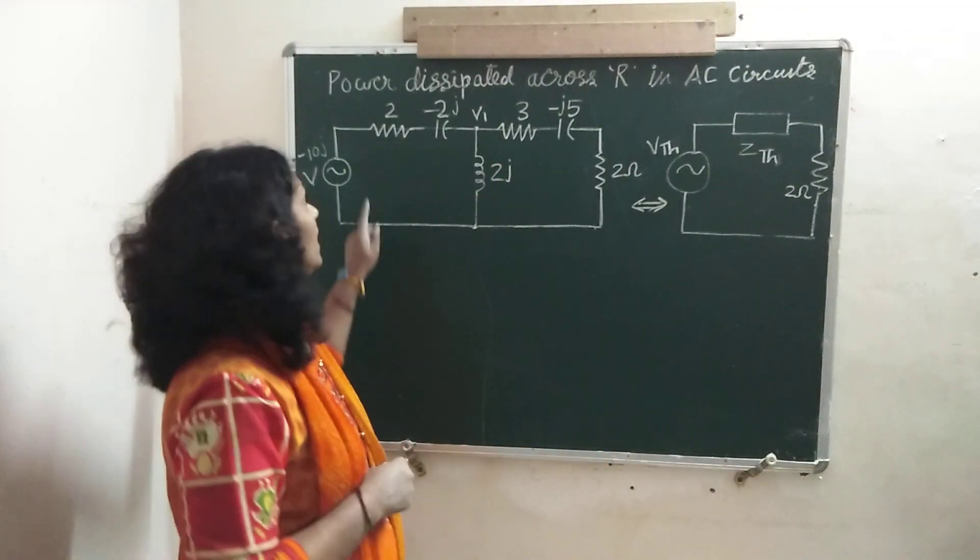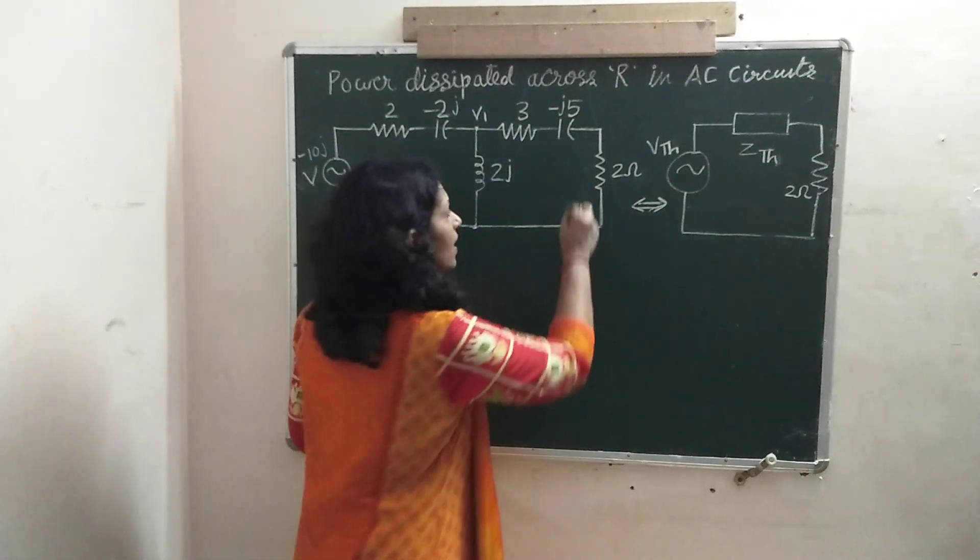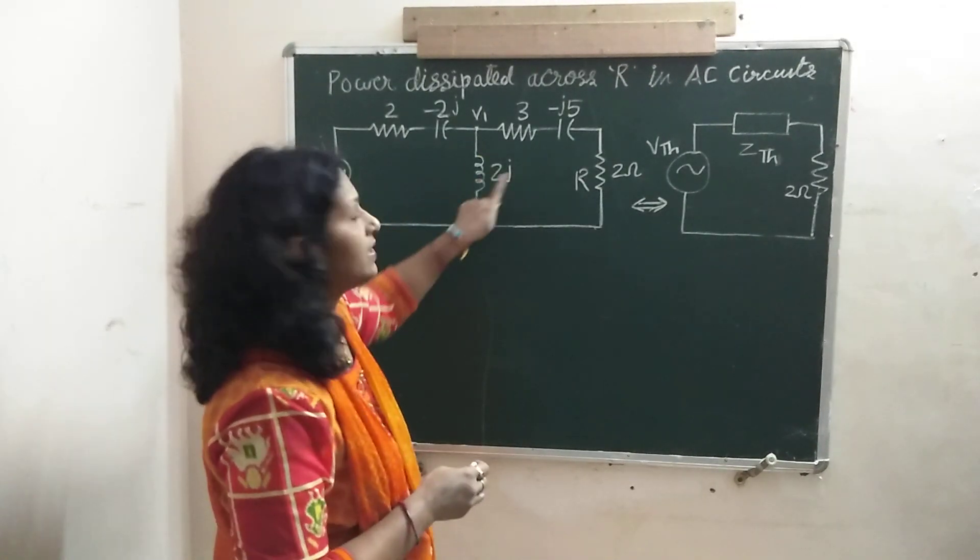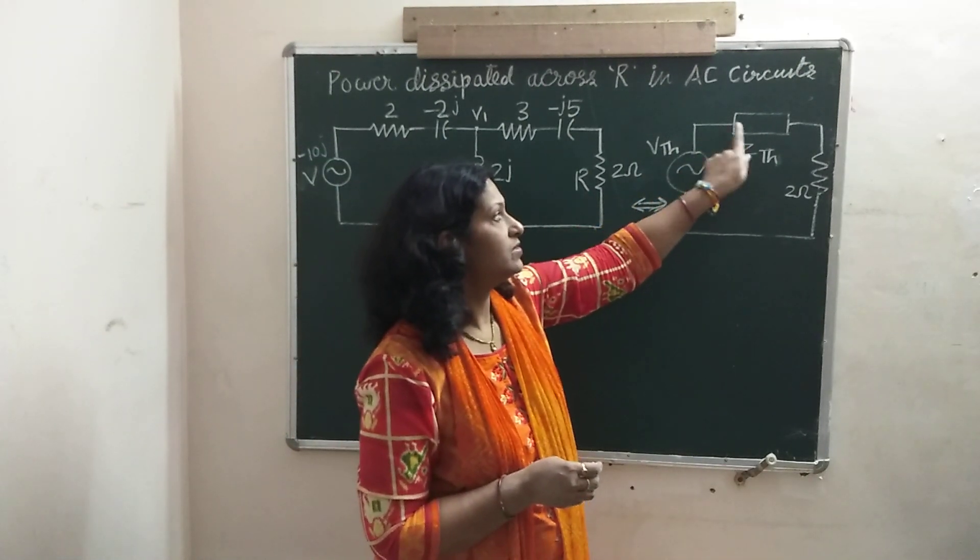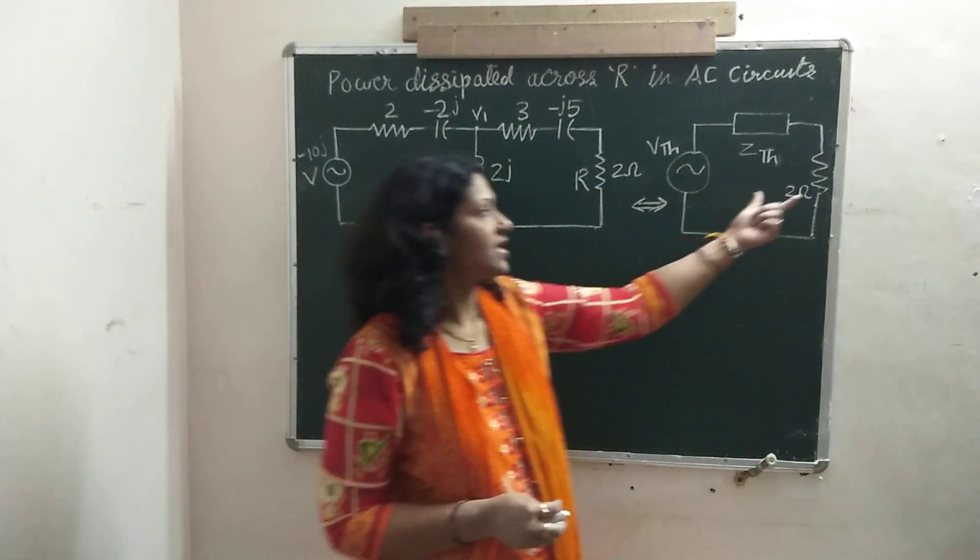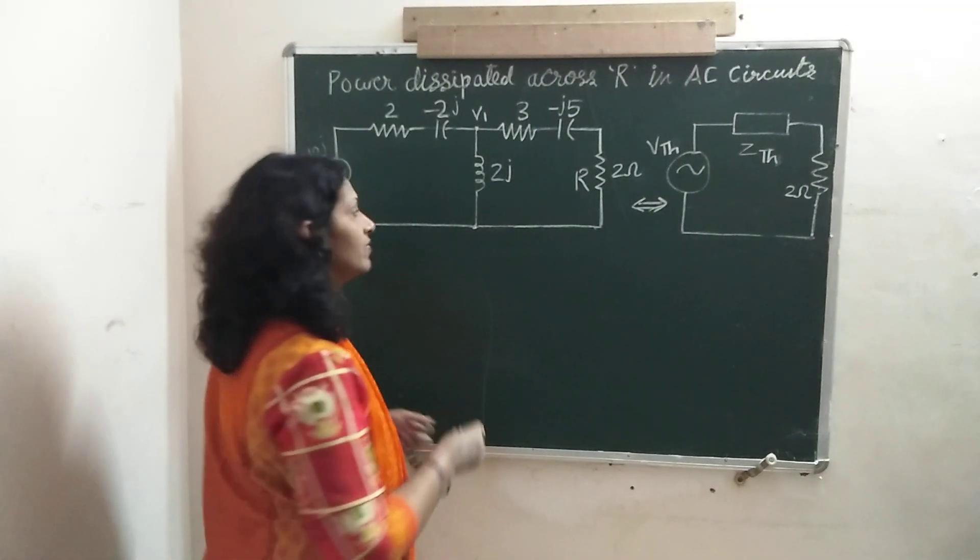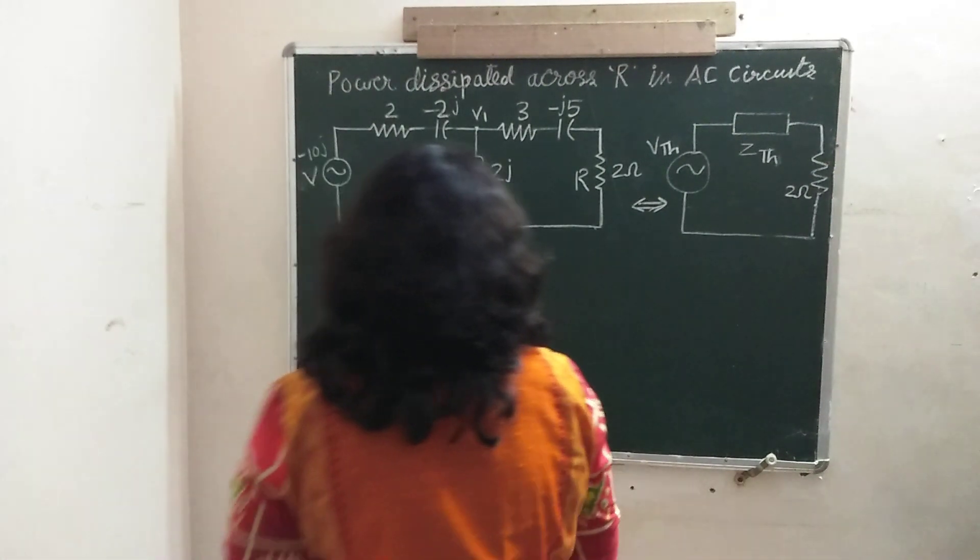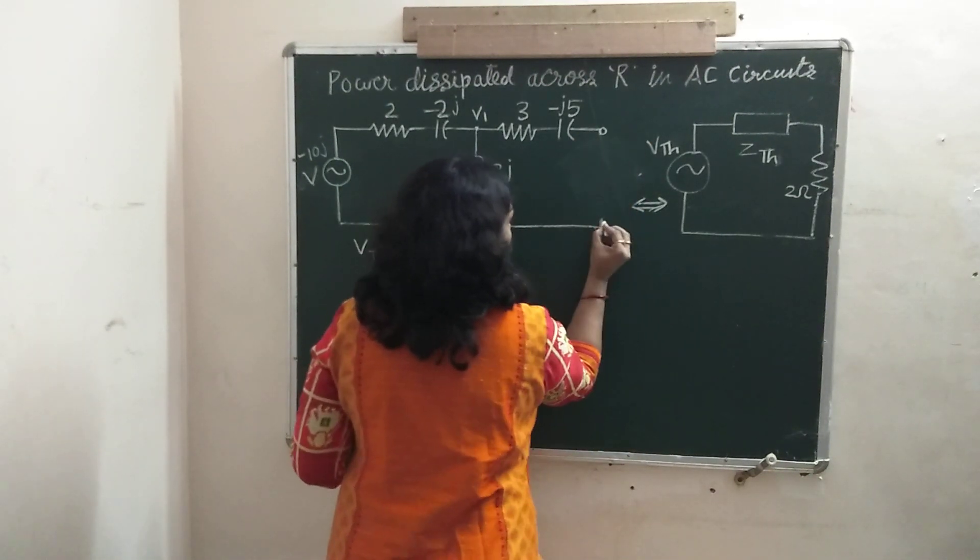This is an AC circuit and here we will find power dissipated across this resistor R in this circuit. First we will find the Thevenin equivalent, that is Thevenin voltage and Thevenin impedance of the circuit leaving this R. Then we will connect this R in series with the Thevenin circuit. So, first step is to find the Thevenin voltage. To find this Thevenin voltage, remove this resistance where we have to find the power dissipated.